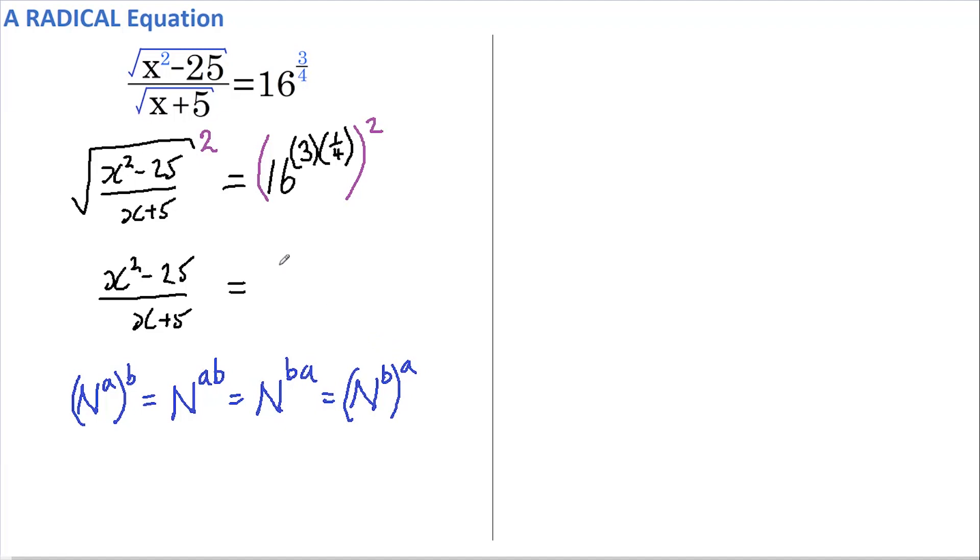So that means here, on the right-hand side, I can write these powers how I like. I could write it as 3 times a quarter times 2. If I wanted to, I could change their order, or I could write this as 16 to the power of 3 to the power of a quarter to the power of 2. I just need to abide by this rule. OK, so let's continue.